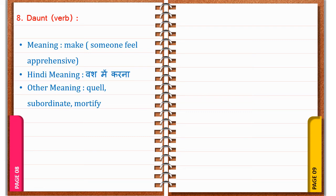Daunt. D-A-U-N-T. It's a verb. It means to make someone feel apprehensive. In Hindi: Vash me karna. Other meanings: Quell, Subordinate, Mortify.